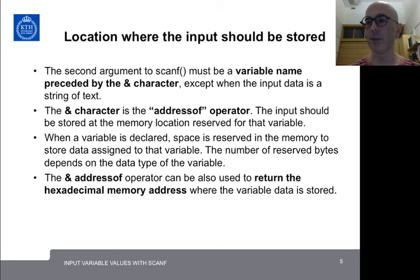When a variable is declared, space is reserved in memory to store the data assigned to that variable. The number of reserved bytes depends on the data type of the variable. The address-of operator can also be used to return the hexadecimal memory address where the variable data is stored.